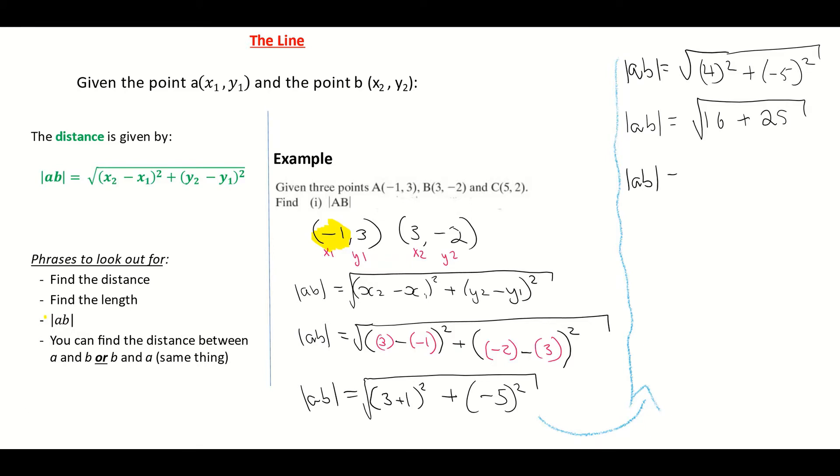16 plus 25 then. So AB, the distance, is equal to √41. And the square root of 41 on your calculator, if again, using a Casio, make sure and hit your SD button. I'm going to go to one decimal point, which is 6.4 units.